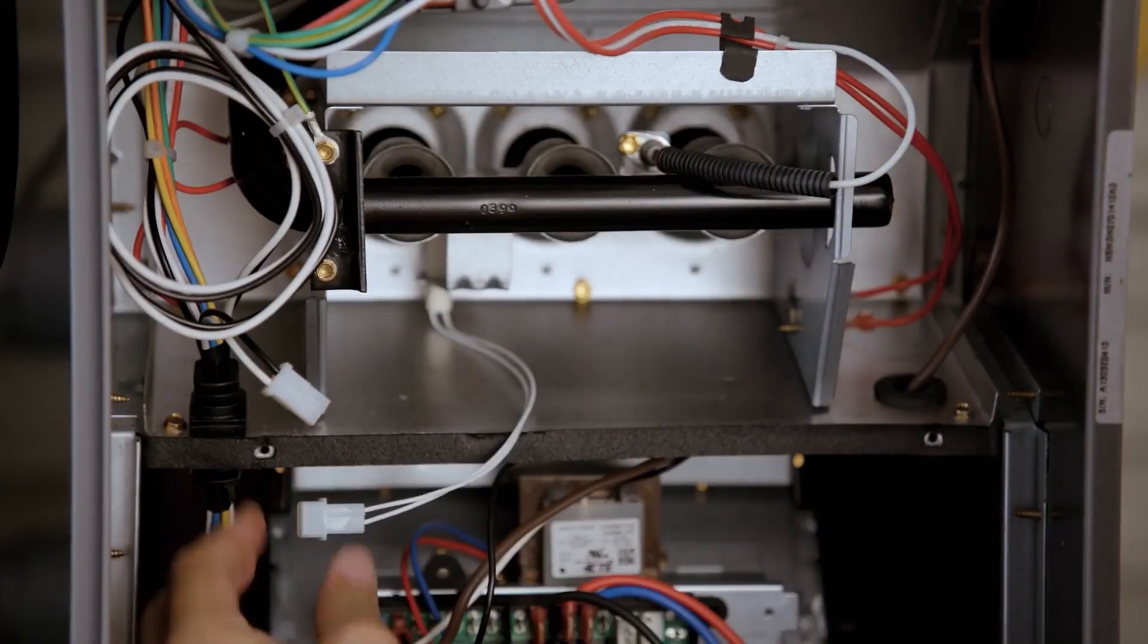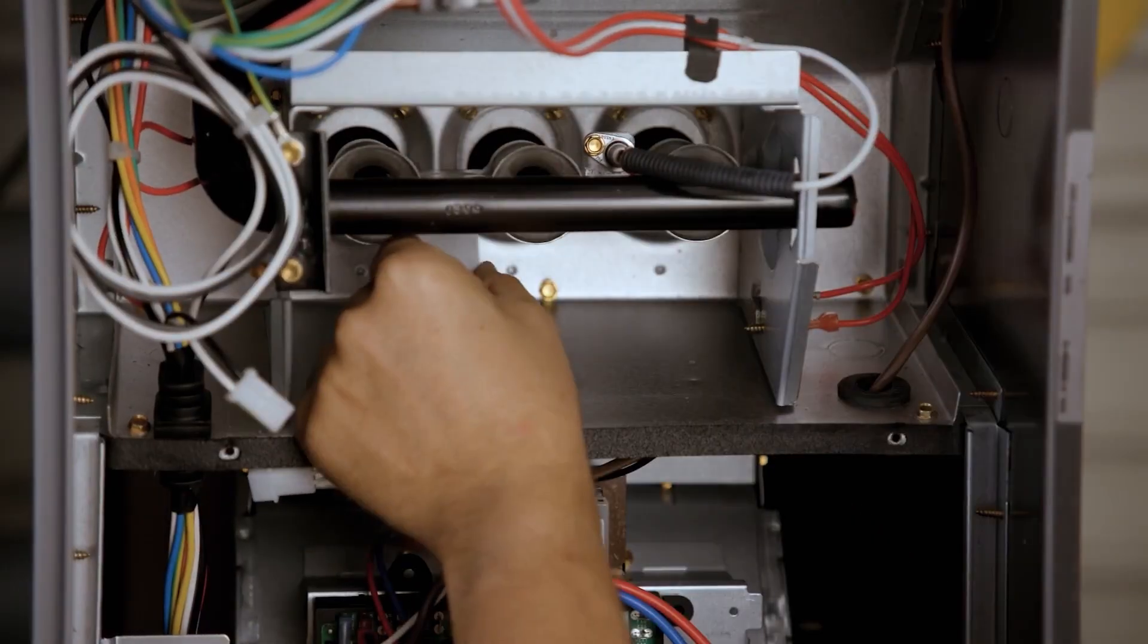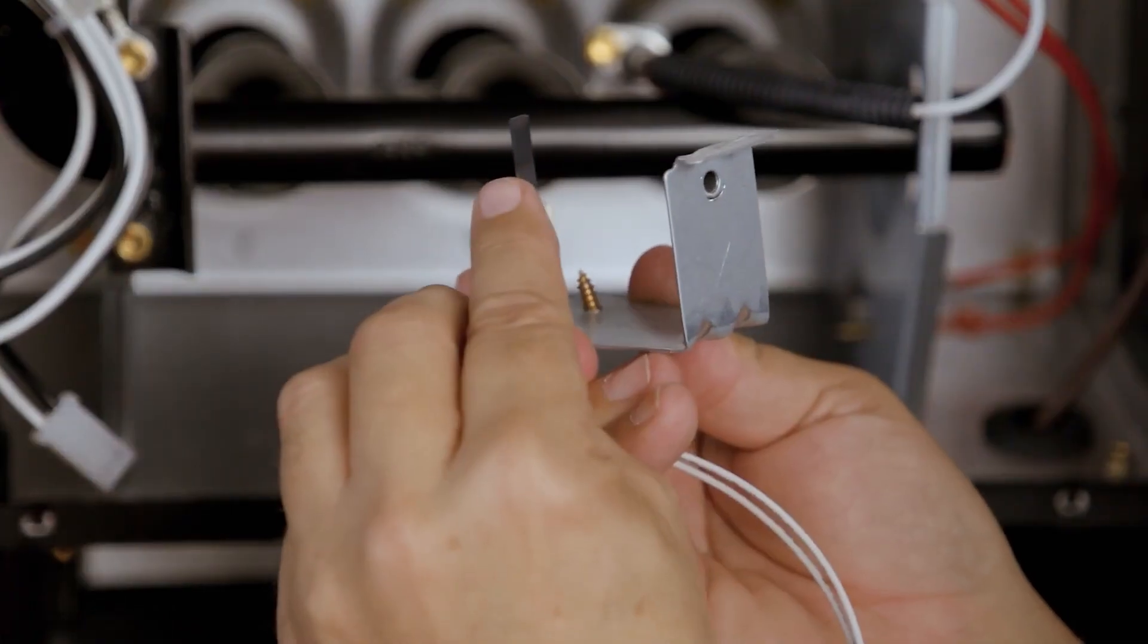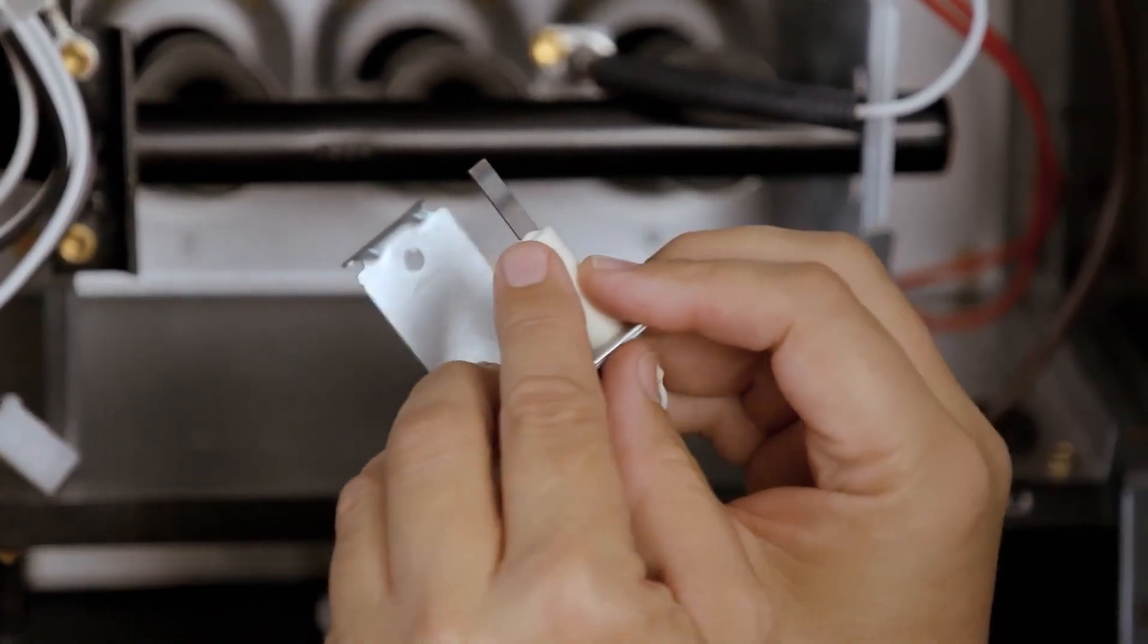If the existing control uses an 80V igniter, then you must install the provided 120V hot rod igniter.